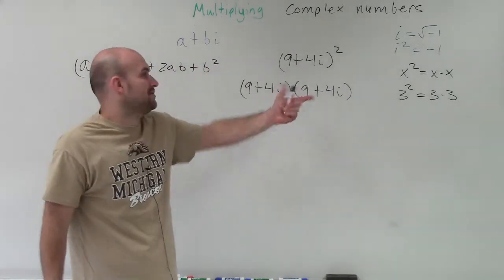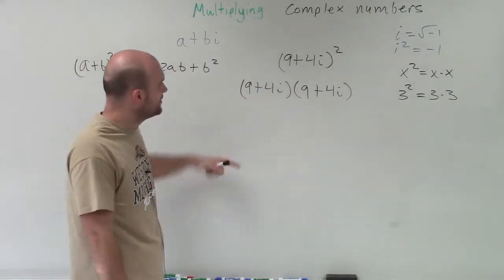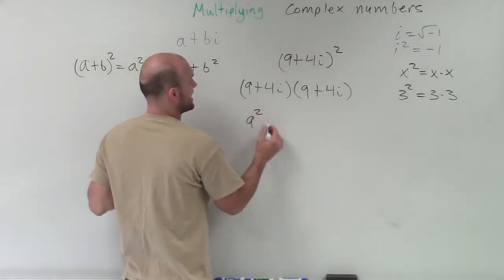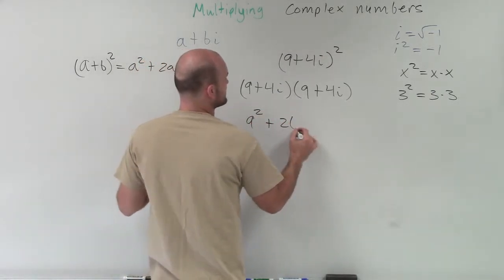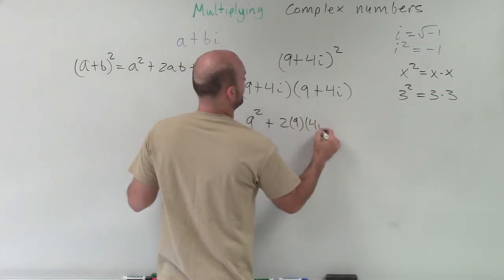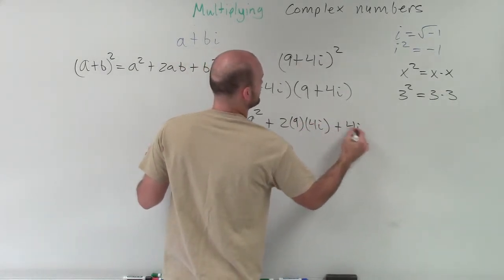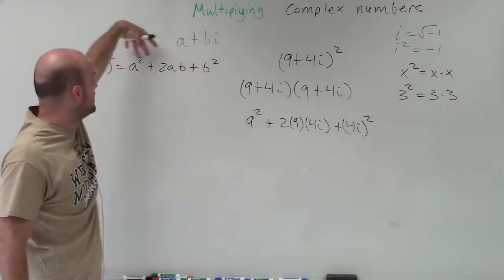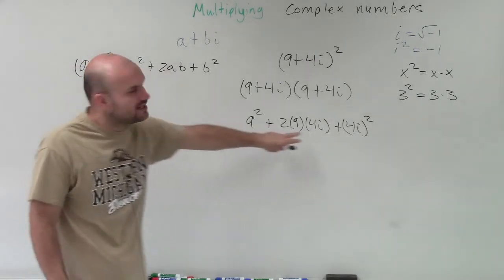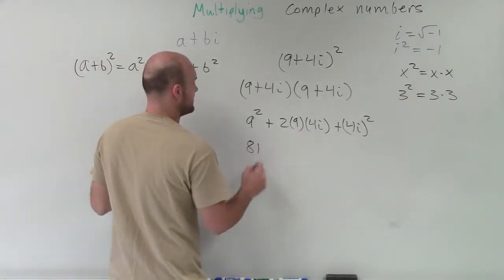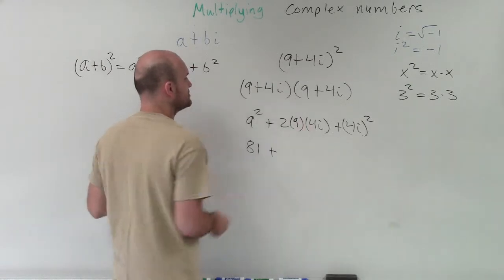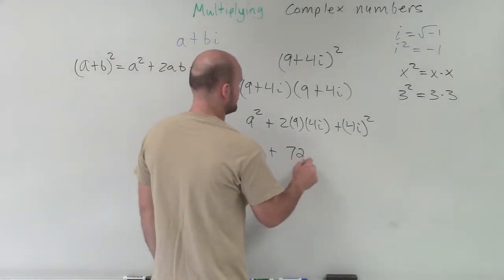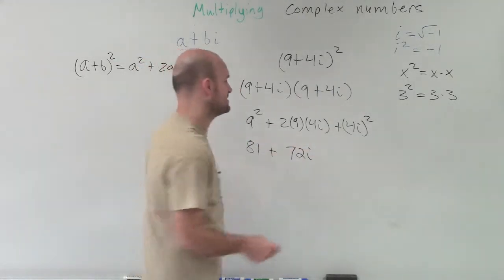So we don't have to multiply all this out using FOIL. We can apply the perfect square trinomial formula, and therefore it's simply going to be 9 squared plus 2 times 9 times 4i plus 4i squared. By applying our perfect square trinomial technique, we can just write it like this: 9 squared is 81, plus 2 times 9 is 18, times 4 is 72i, and then we have 16i squared.